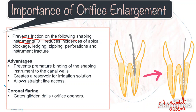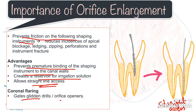The advantages of coronal flaring are: it prevents premature binding of shaping instruments to the canal walls, it creates a reservoir for irrigation solution, and it allows a straight-line access. Orifice enlargement or coronal flaring can be achieved with the help of Gates Glidden drills or various rotary files called orifice openers.